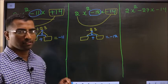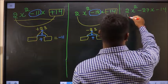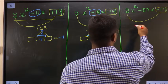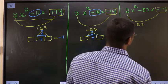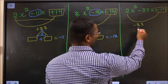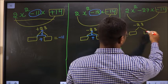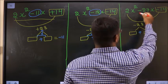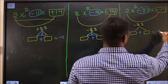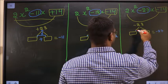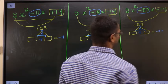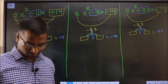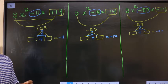For the third expression, again multiply 2 × (-14) = -28. Now look for two numbers such that when you add them you get the middle number, minus 27, and when you multiply them you get minus 28. Are all three cases clear?